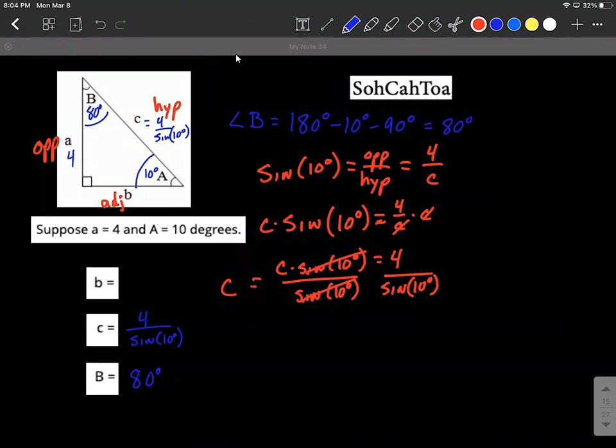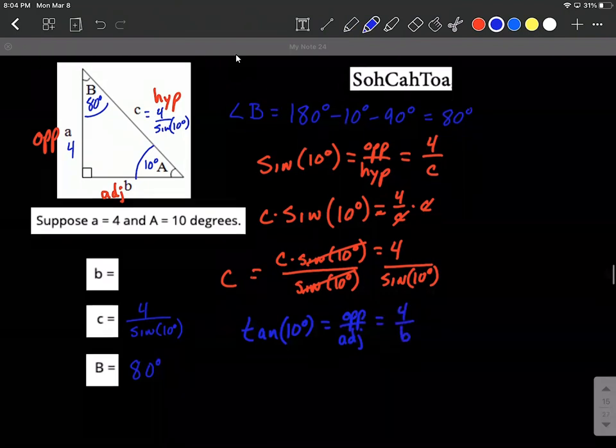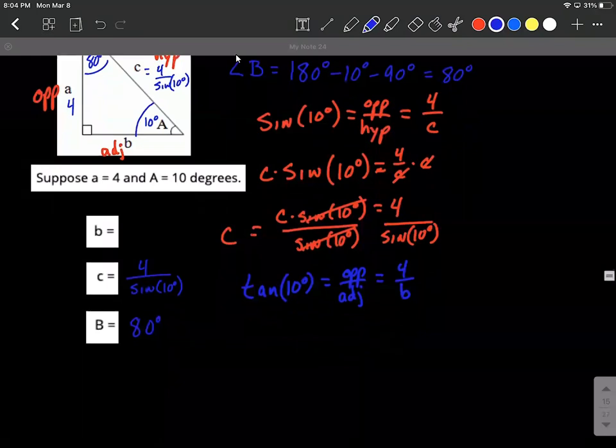If we choose tangent, looking at the 10 degrees again, we can say tangent of 10 degrees is going to be opposite over adjacent. So in our case, the opposite is 4 and the adjacent is going to be B. Now that we have that set up, we can solve it down, really ignoring the middle part there, 4 over B.